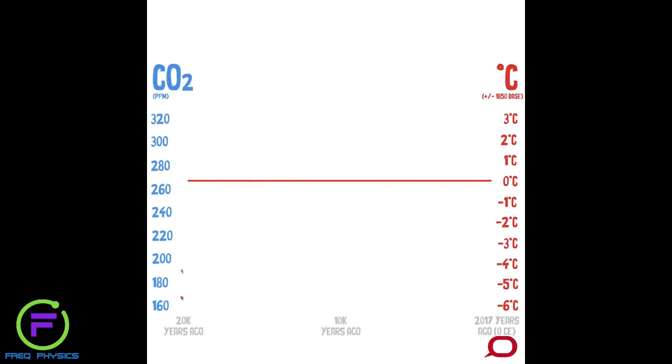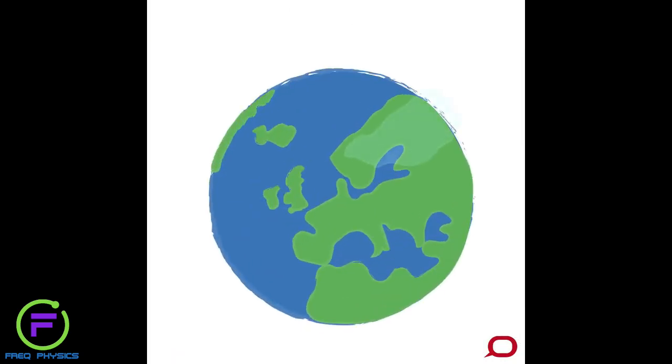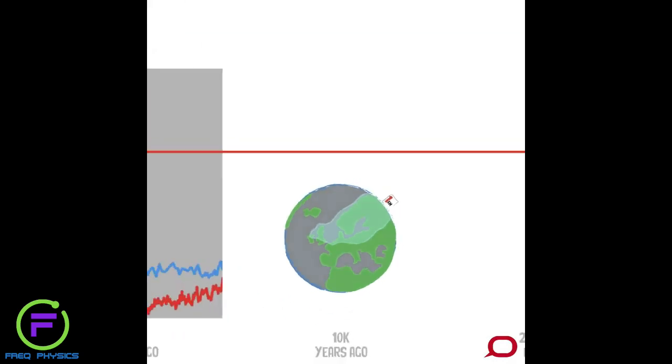At about 20,000 years ago we have the last ice age. At that time, kilometre-thick ice sheets spread across Europe and North America, eating up water and driving sea levels down to 130 metres lower than where we are today.